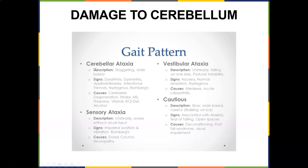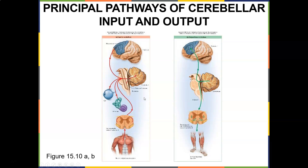So the cerebellar ataxic gait — if you've ever been really drunk, this gait pattern may look familiar. There are different kinds of gait patterns: sensory ataxia, impaired position sense, vestibular ataxia such as Meniere's, and a cautious gait when people get older from deconditioning. But the cerebellar ataxia is what I really want to show you.